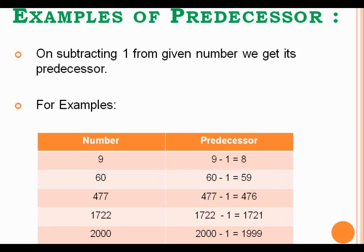For example, the given number is 9. If we want to find out the predecessor of number 9, we have to subtract 1 from 9, and we will get the answer 8. So, 8 is the predecessor of the given number 9.